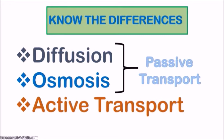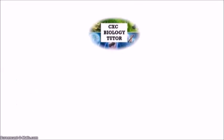Now that we've covered all three processes, hopefully you know the differences. Diffusion and osmosis are two forms of passive transport — no energy needed. Active transport is the one that requires energy because it moves substances against the concentration gradient. Hopefully you now clearly understand the differences between these three terms.